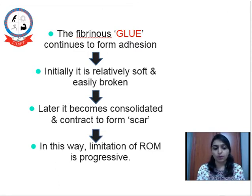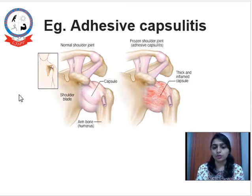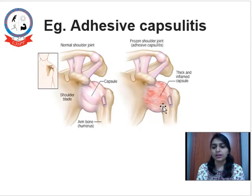The best example of adhesion formation is adhesive capsulitis. Here we can see a normal shoulder joint alongside one affected with adhesive capsulitis — there is inflammation and thickening of the capsule which we can see, and inside it there will be adhesion formation.